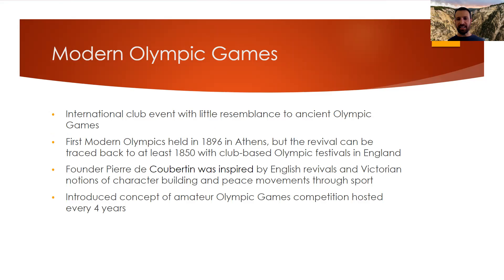Now we have the modern Olympic Games, which started in 1896 — going back to the 1800s. This traces back to at least the 1850s with the revival. Pierre de Coubertin was a big name in sport management. He founded the Olympic Games, and it initially was a character-building and peace movement through sport. He also introduced the Amateur Olympic Games.